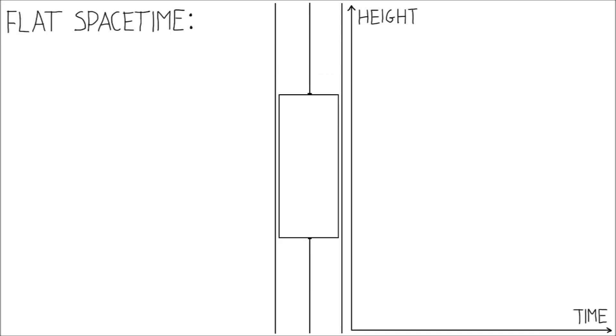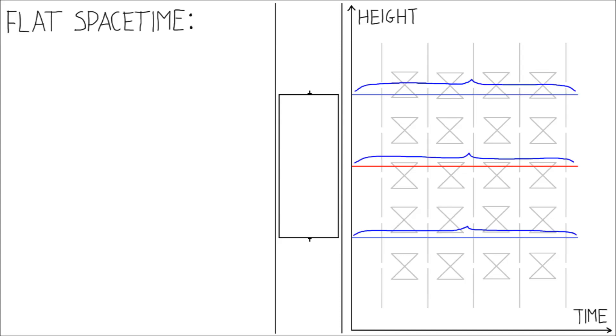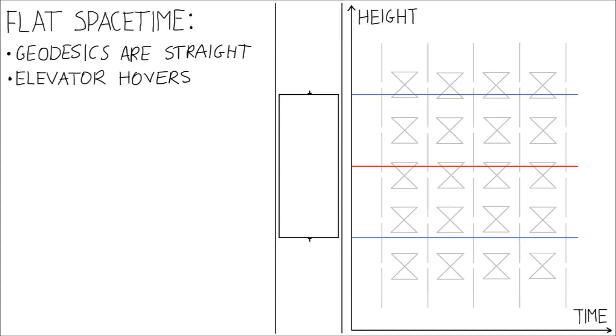If the spacetime is flat, the metric tensor is everywhere the same. This picture has only one dimension of space, so instead of crosses we should use vertical lines. Let's cut the ropes. If the elevator does not move, its top, its middle and its bottom all travel the same distance through spacetime. Geodesics are straight lines in flat spacetime and so the elevator stays in place.